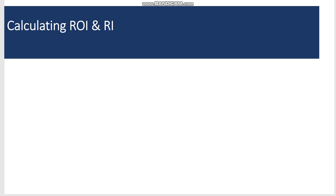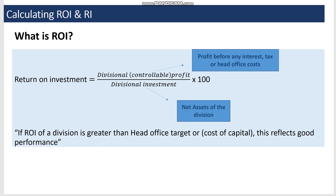Let's learn how to calculate return on investment and residual income. Before we calculate ROI and residual income, let's have a look at the formulae used. Return on investment is divisional profit divided by divisional investment, multiplied by 100.